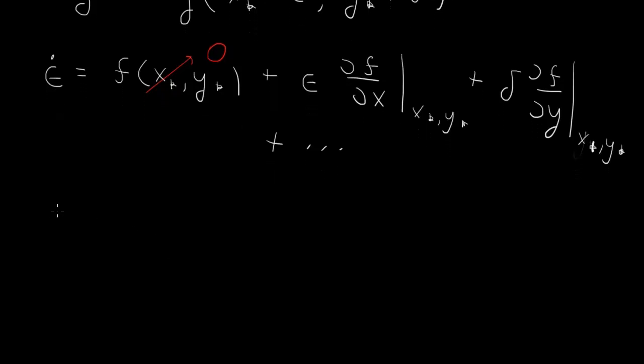So then we also have delta dot as the constant term, g of x star, y star. X star, y star is a fixed point, so that too is 0. And then plus the linear term.